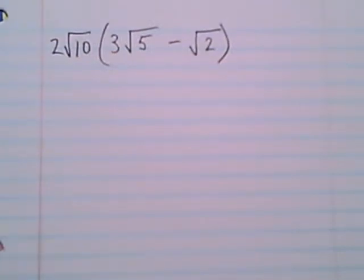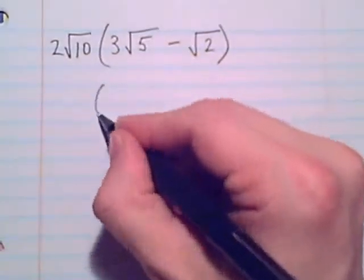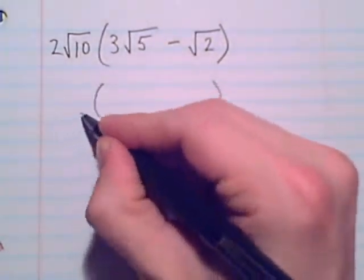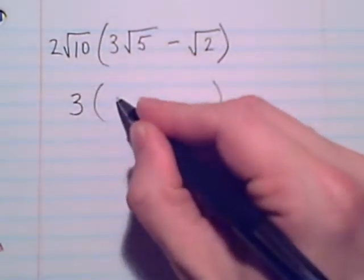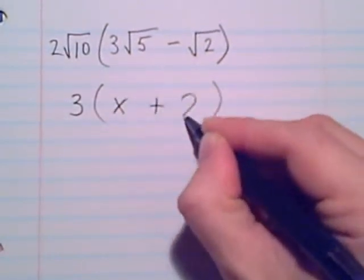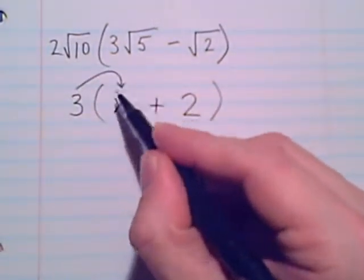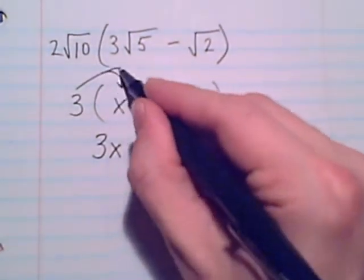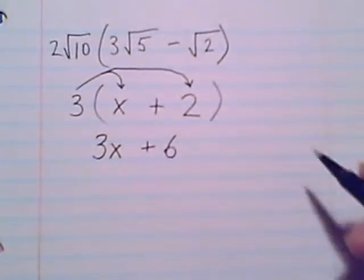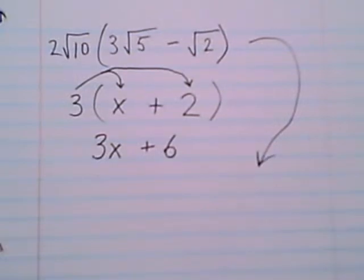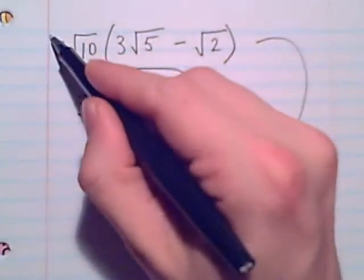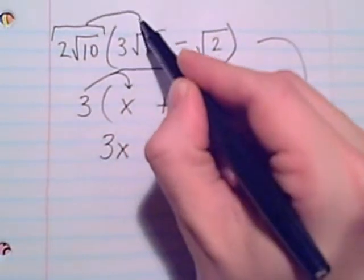Our next multiplication example, you need to, again, train your eyes to observe certain things. And this is where we need to distribute. It's similar to other times where we would have one number right out in front of a set of parentheses with two terms inside. And this we would need to distribute. We would make it 3 times x is 3x and 3 times 2 is 6. That would be the type of multiplication we need to do. So with this one, it is, again, distribute.